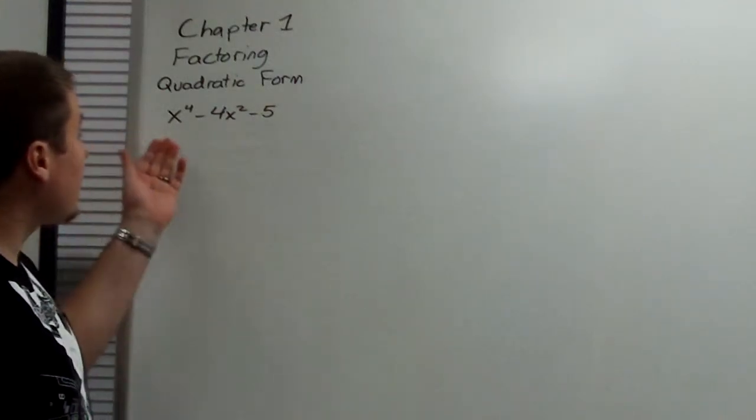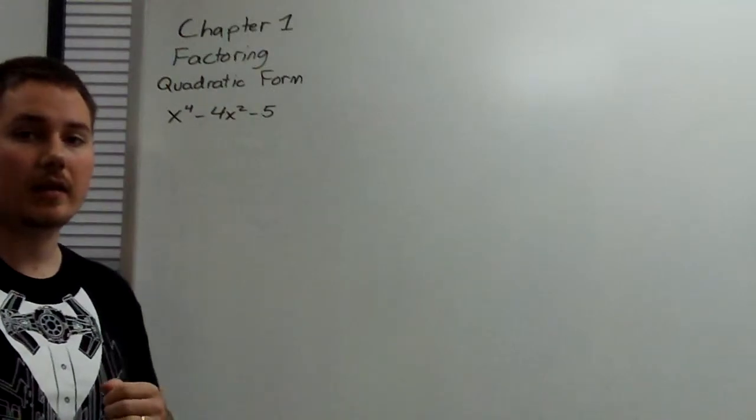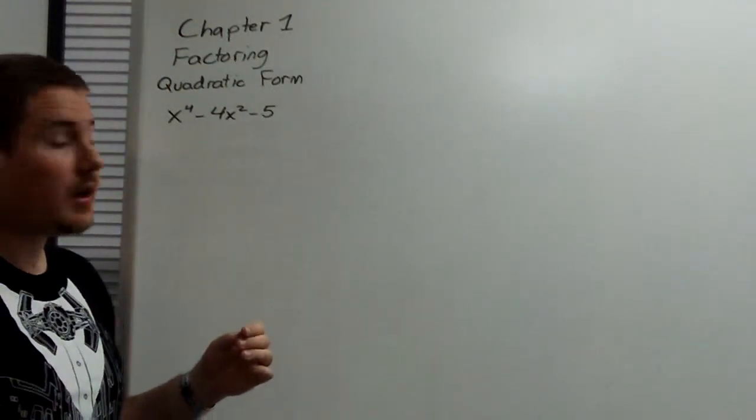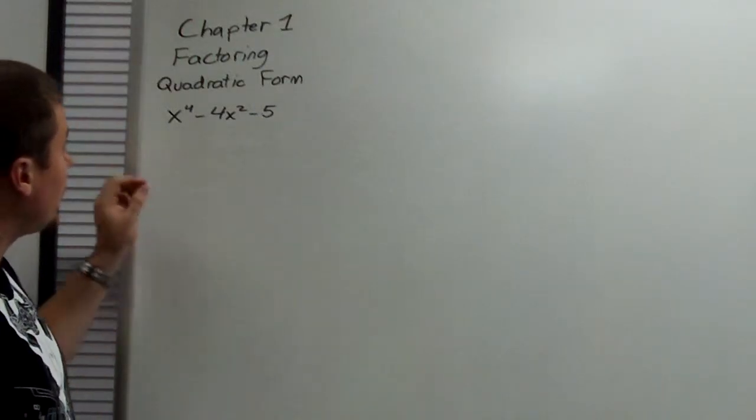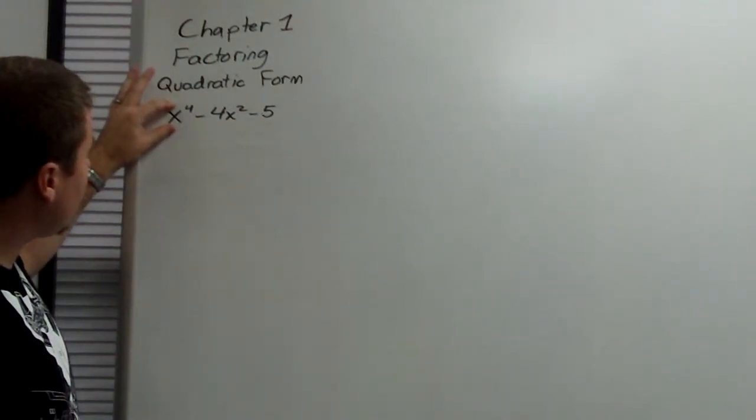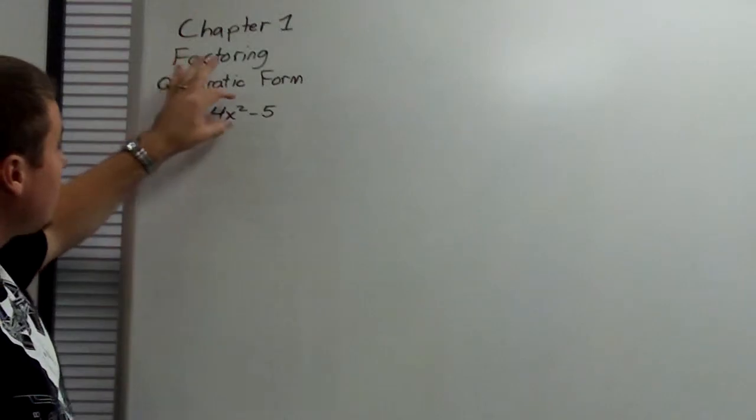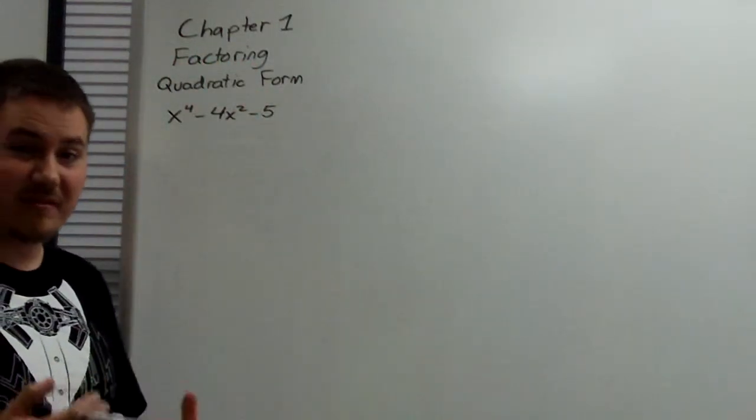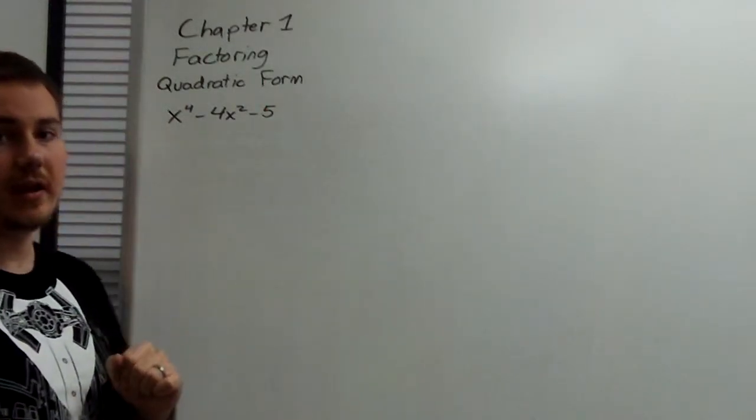Now, this is an x to the fourth, and generally we are low on techniques to solve, or factor, a fourth degree polynomial. But if you take a close look, you'll notice that the degree here, 4, is twice the degree of this term, which is 2. And then there's a constant. It looks very quadratic, even though it's not a second degree.